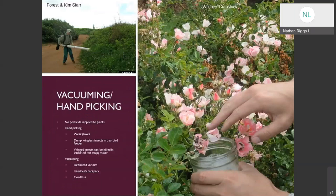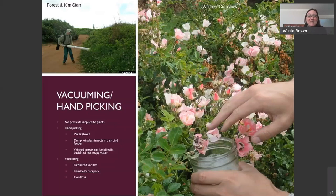Vacuuming and hand-picking are effective mechanical controls. For backyard vacuuming, a cordless handheld vacuum that is not a top-of-the-line model is recommended — you want enough suction to remove the bugs but not so much that it inhales the plant. For hand-picking, you can tap insects so they drop into a jar of soapy water or rubbing alcohol rather than touching them directly, and they'll end up dying in there.